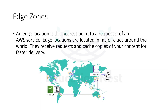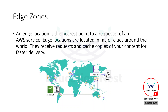The next and last topic for this first module is Edge Zones. So what are Edge Zones, and how are they different from Local Zones? An Edge Zone or Edge Location is the nearest point to the requester of the AWS service. In Local Zones, we are actually deploying our infrastructure, but into the Edge Location we do not deploy — we just cache the copy.